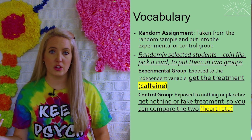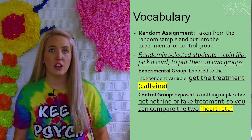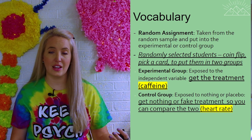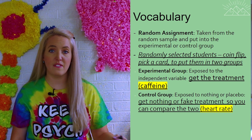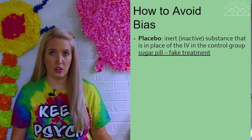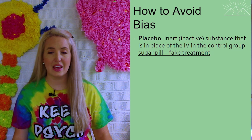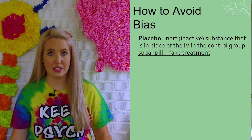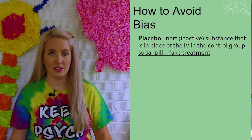The experimental group is going to get the treatment — in this case the caffeine. The control group is going to get either nothing or a placebo, a fake or inert substance, so that they believe they're getting the real thing. This allows us to compare the two groups afterwards and make sure that any change — such as an increase in heart rate — is actually due to the caffeine they are receiving.